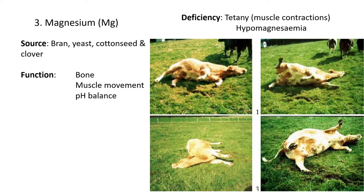The second deficiency is hypomagnesemia. Hypo means little, and magnesemia sounds like magnesium — so basically it means little magnesium. The animal is getting in less than it needs. That's called hypomagnesemia.